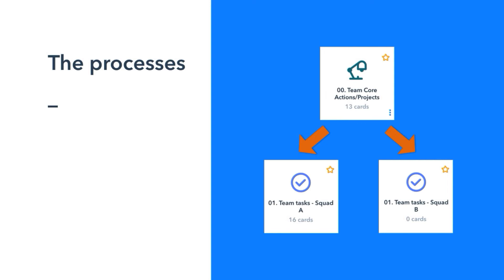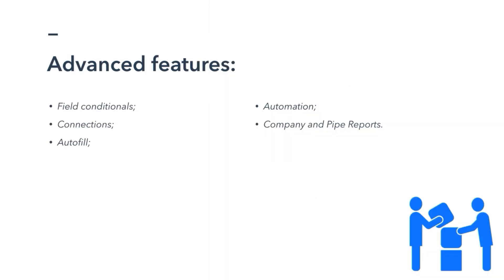Our connection field also has an advanced setting called autofield that auto-fills some of the data from the parent card when creating tasks, which helps save a lot of time. We also have automation rules so that when we move one of the task cards in the squad pipes, the parent card in the main pipe is also moved via automation. So when we move one of the tasks to doing, our main project card is also moved to doing. And when we move all the tasks to done in the squad pipe, the parent card is also moved to the next phase.